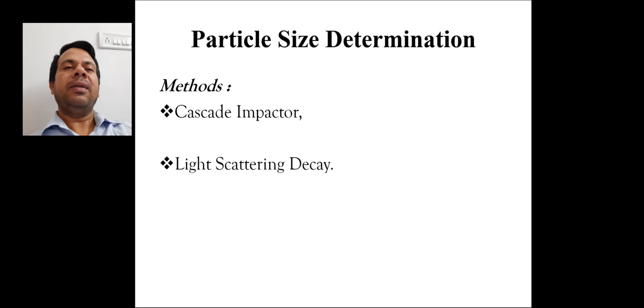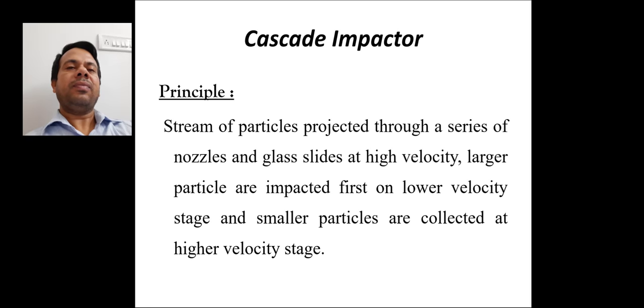Next comes particle size determination. Two methods are there. First one is cascade impactor and second one is light scattering decay. In cascade impactor, the principle is that a stream of particles is projected through a series of nozzles and glass slides at high velocity. The larger particles are impacted first at lower velocity and smaller particles are collected at higher velocity stages.